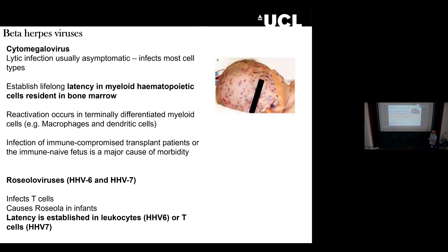In immunosuppressed transplant patients and the immune-naive fetus, CMV causes significant disease. The other beta herpes viruses — HHV six and seven — are much less well understood. CMV has always been the poster child for the beta herpes viruses due to its clinical presentation. HHV six and seven infect T cells but also monocytes. They cause roseola in infants — a rash phenotype — and this tends to be self-limiting.